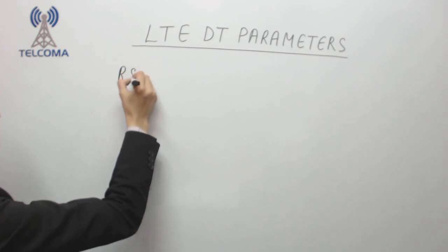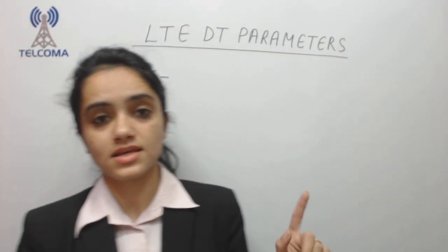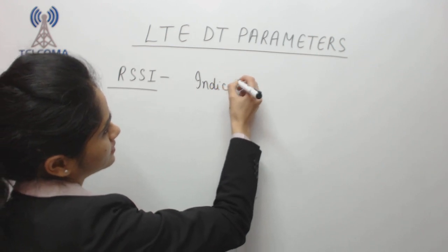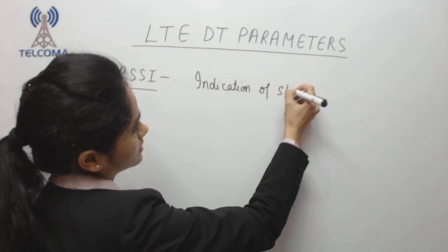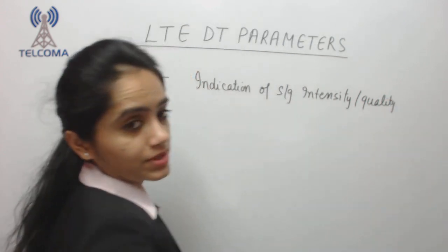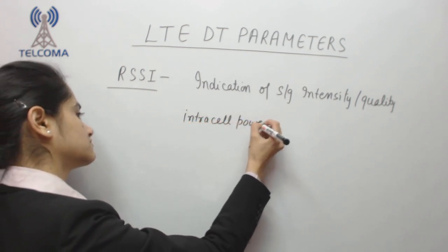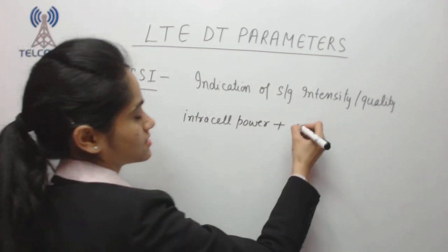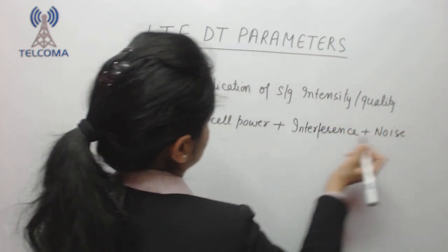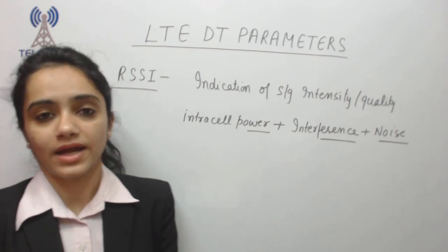Next we have RSSI, which is basically wideband power including inter-cell power, interference, and noise. It is a complete combination of all power and is an indication of signal quality. RSSI is a combination of intra-cell power plus interference plus noise, reflecting what power we are getting, what interference is present, and how much noise we are receiving. Its value ranges from minus 3 to minus 19.5 dBm.